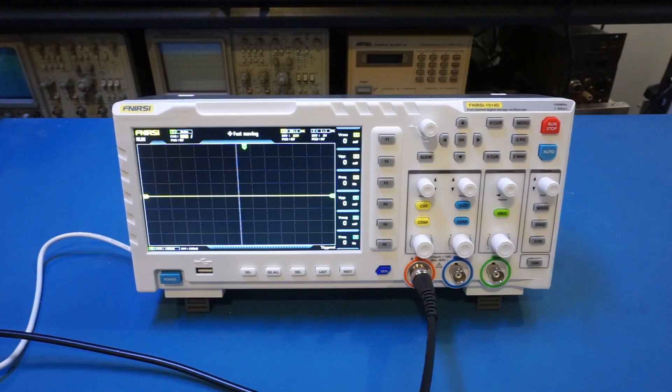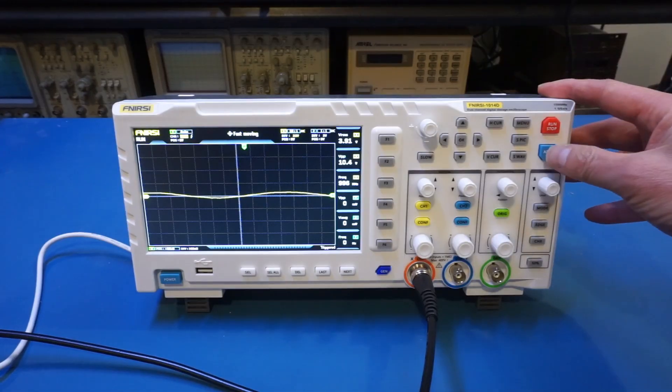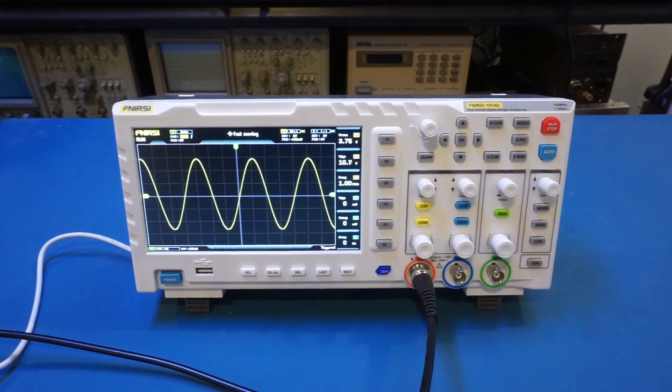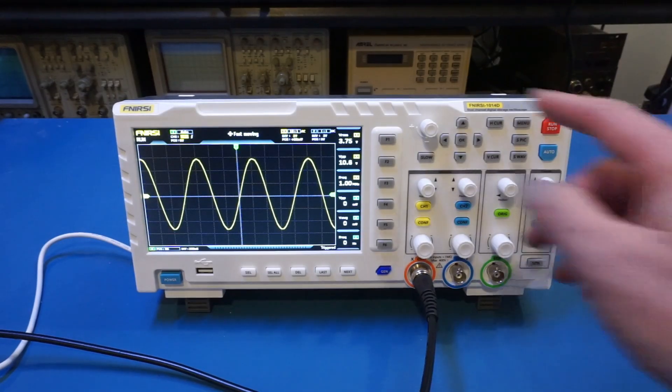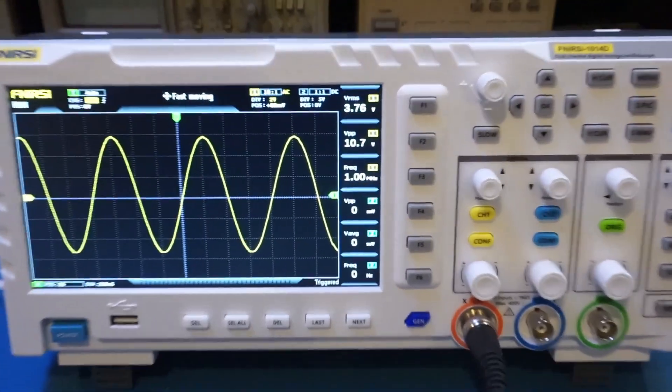Now let me put a signal in. Currently the channel is hooked up to the UTG962E function generator, so right now I'm outputting a one megahertz, one volt peak-to-peak sinusoidal. So let me enable the channel and of course let's do some auto adjustment here. And you can see that we acquired a signal with relatively no issue at all.